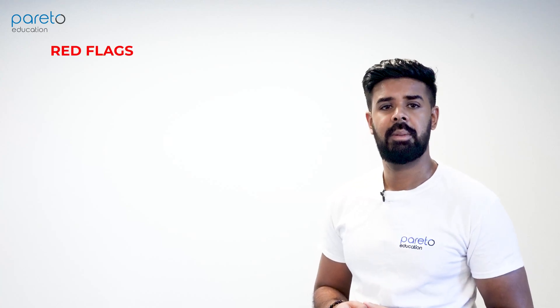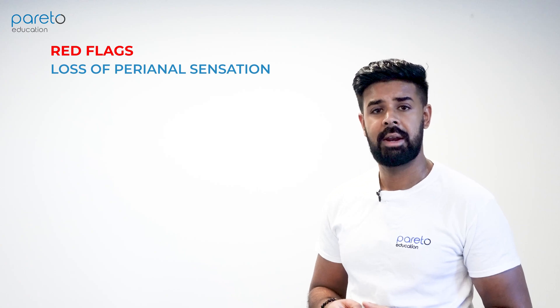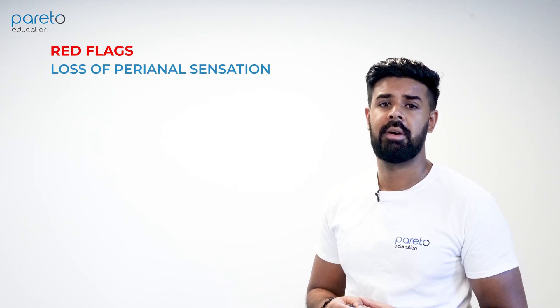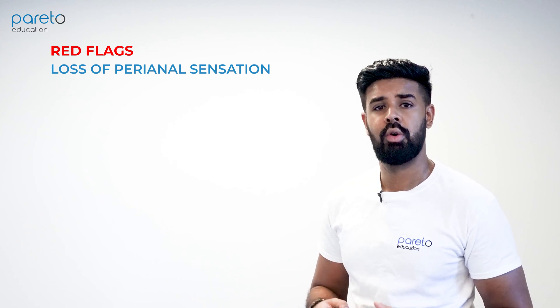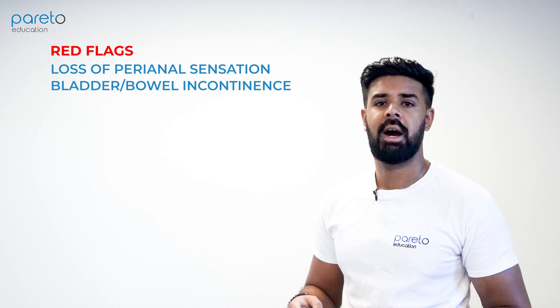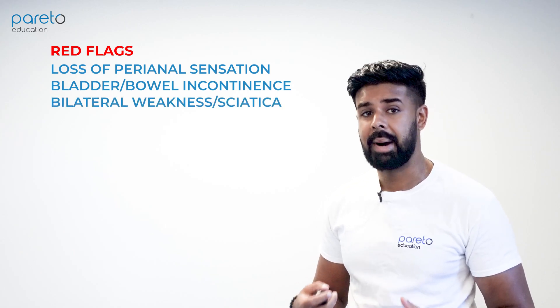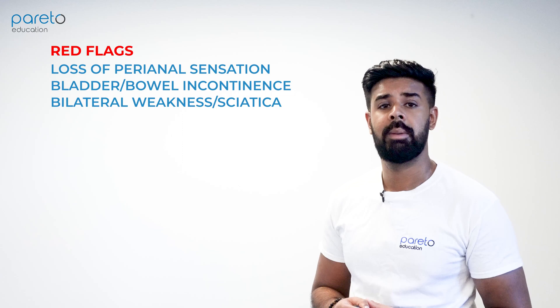Don't forget those all-important red flag symptoms. Ask about the following: Is there loss of sensation around the perianal area? Does the patient have loss of control over their bladder or bowels, known as incontinence? Do they have any shooting pains or loss of sensation bilaterally on both lower limbs? If these are present, you should instruct the patient to seek urgent attention, with a potential MRI scan warranted.